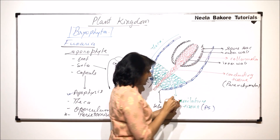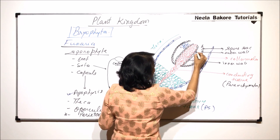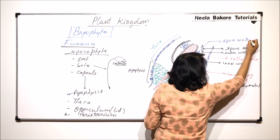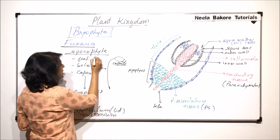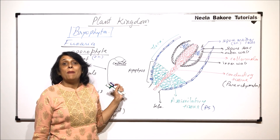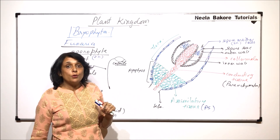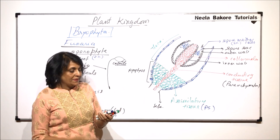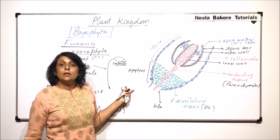Inside the spore sac are cells that are compactly arranged in the beginning, then they undergo meiosis. These cells are the spore mother cells and they are diploid. The sporophyte is a diploid structure because it is formed from the zygote by simple mitotic divisions — no meiosis has taken place yet. The spore mother cells will undergo meiosis to produce haploid spores.